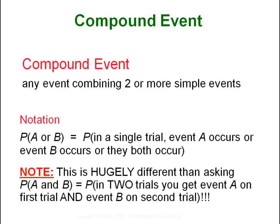The probability of A or B is saying that in one single experiment, either event A occurs, event B occurs, or they both occur. So back to the example: either it is a face card or it is a spade — those are your two simple events — and we are looking for something that satisfies one, the other, or both.